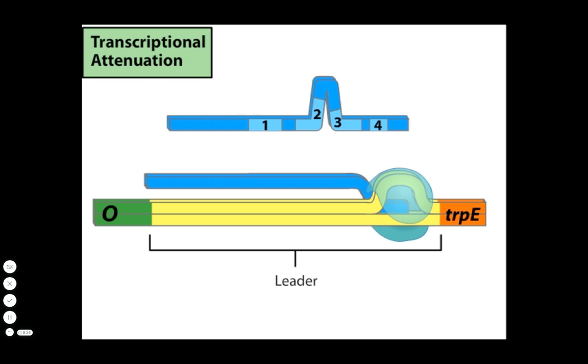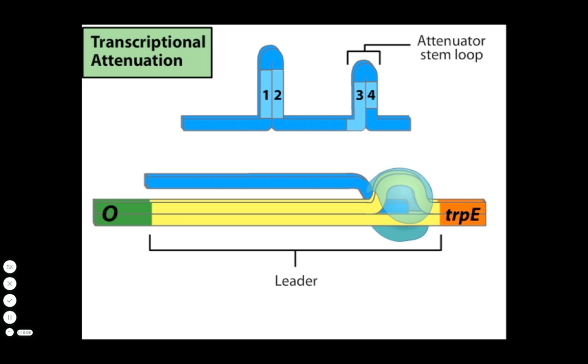Regions 2 and 3 can pair to form a structure called the anti-attenuator stem loop. Alternatively, regions 1 and 2 can pair and 3 and 4 can pair. When 3 and 4 pair, the structure formed is called the attenuator stem loop, and it is this structure that triggers transcription termination.